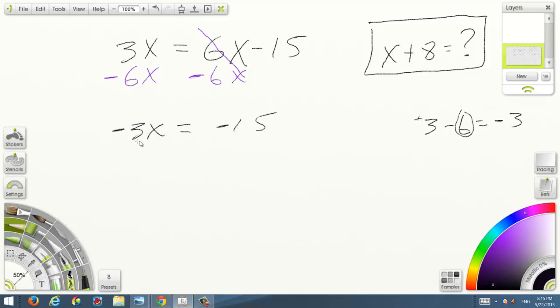Basically, now we have to eliminate this negative 3. What you do on one side, you do on the other. How do I eliminate a multiplication? This is a multiplication, I have to divide by the same number, negative 3. What you do on one side, you have to do on the other side.